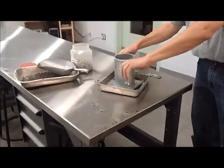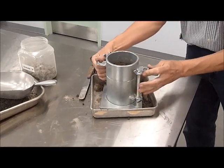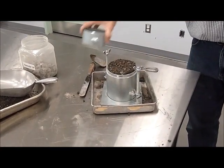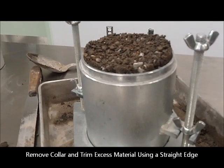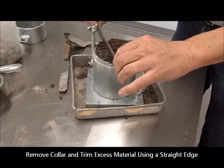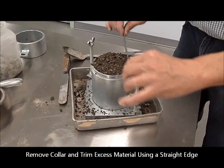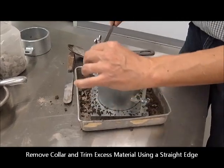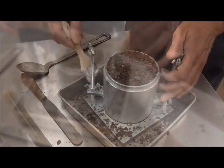Remove the collar from the mold. And using a straight edge bar, we're going to ensure that the final volume is exactly 1 over 30 of a cubic foot.